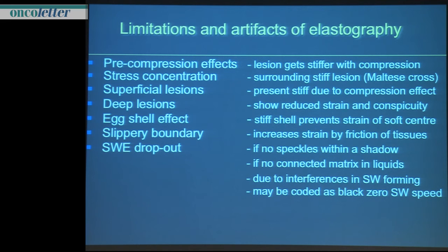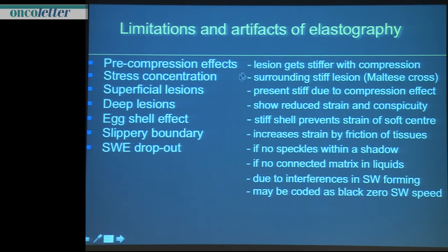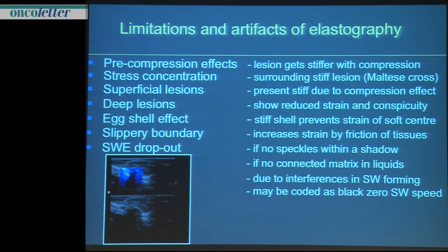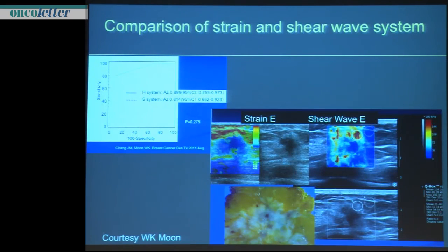If you press a hard ball against soft tissue, the soft tissue becomes stiffer. This is true for both superficial and deep lesions. There is also an effect where a stiff shell prevents strain of the soft center. At a slippery boundary, we get typical strain artifacts. And there is a phenomenon like shear wave dropout if there is no signal at all within the lesion. Many artifacts can harm interpretation and you have to understand them to apply this technique correctly.